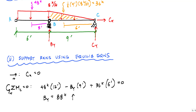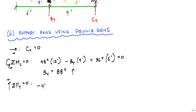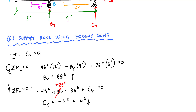Using the sum of forces in the vertical direction: negative 48 kips from the uniformly distributed load, plus BY of 88 kips, minus the linearly distributed load of 36 kips, plus CY equals zero. This gives CY equals negative four kips. That negative value means CY is actually four kips pointing downward. Now that I have the support reactions, the next thing I want to do is draw the shear and moment diagrams.